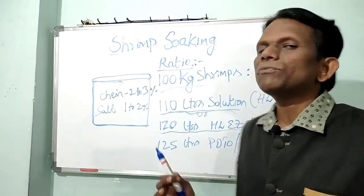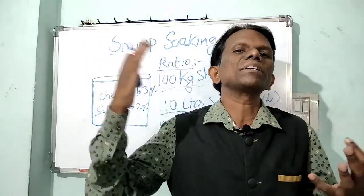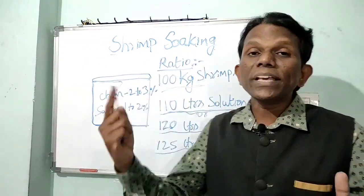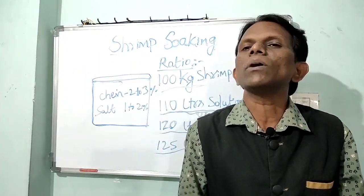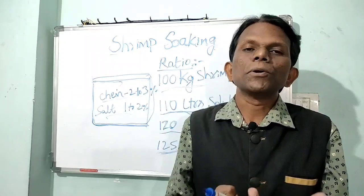For 100 kg of PD or PDTO shrimps, prepare a minimum of 125 to 140 liters of solution. This is because during mechanical or manual agitation, if the solution volume is insufficient relative to the material, the agitator can damage the texture and cause more broken pieces. The solution ratio must always be maintained appropriately to get optimum weight gain results with phosphate or non-phosphate chemicals.